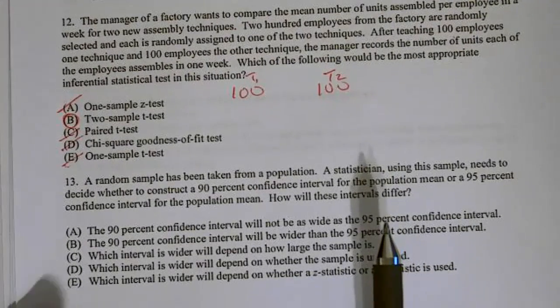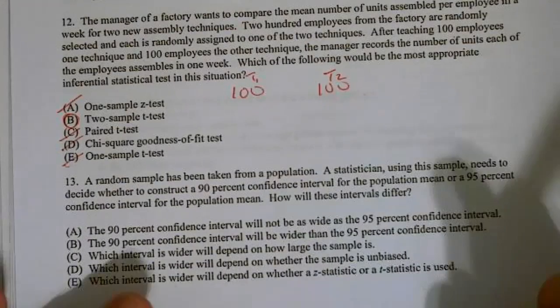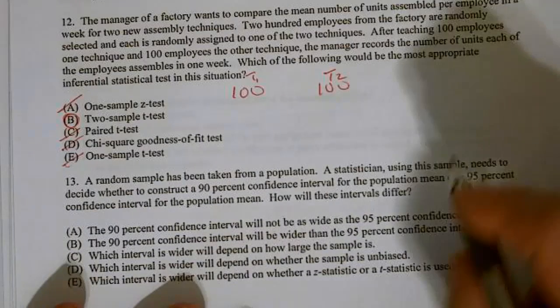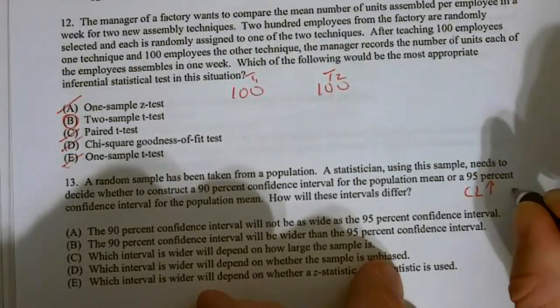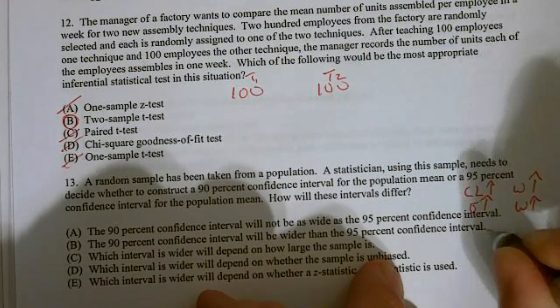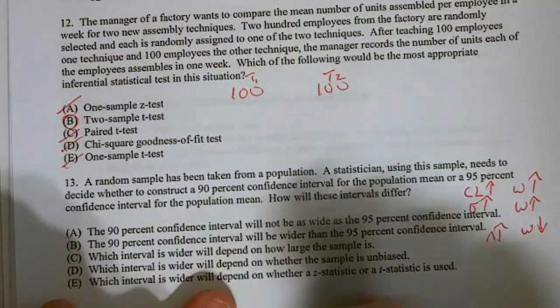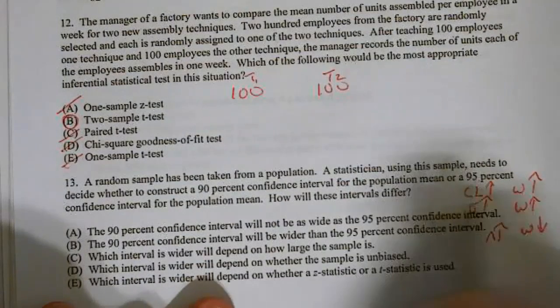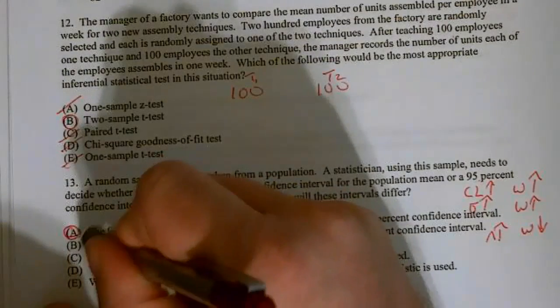A random sample has been taken from a population. A statistician using the sample needs to decide whether to construct a 90% confidence interval for the population mean or a 95% confidence interval for the population mean. How will these intervals differ? Well, let's talk about that. As the confidence level goes up, the width goes up. As standard deviation goes up, the width goes up. As the sample size goes up, the width goes down. So, 90% versus a 95. Well, the 90% will not be as wide as a 95. So, the percent of confidence interval will not be as wide as the 95, and that is A. So, 13 is A.